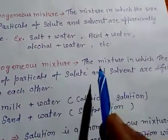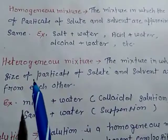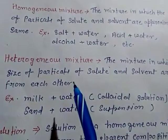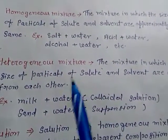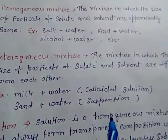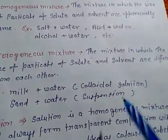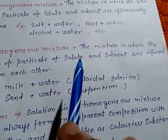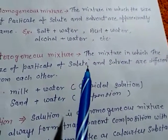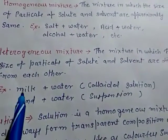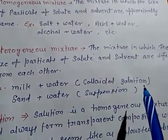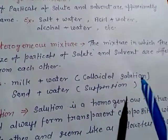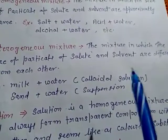Heterogeneous mixture is the mixture in which the size of the particles of solute and solvent are different from each other. Solute means the component that dissolves in any liquid. The solvent is greater in amount and the solute is lesser in amount. Example: milk plus water forms a colloidal solution — it is milky, meaning it is not transparent.